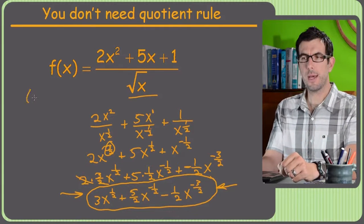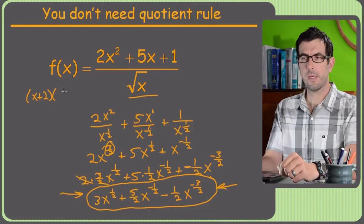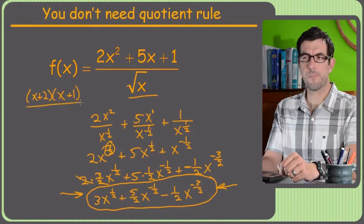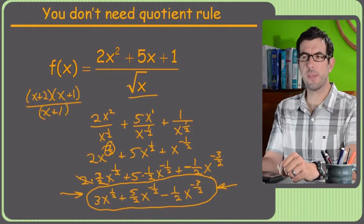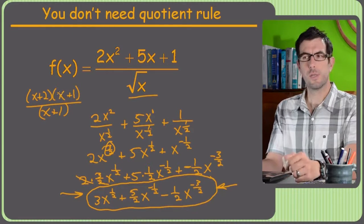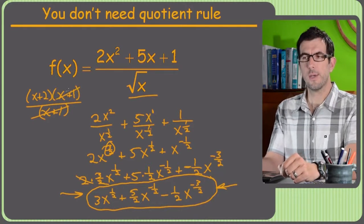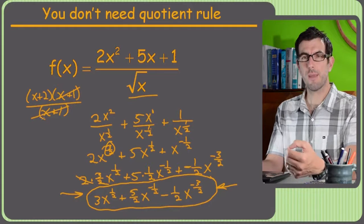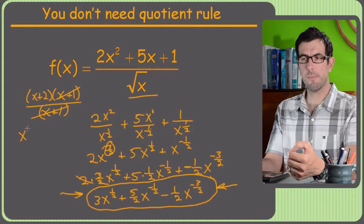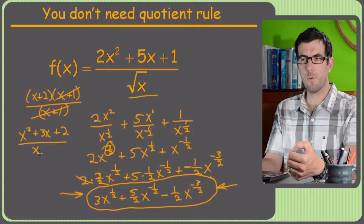Well, let's say we had x plus 2 times x plus 1 over x plus 1, and somebody asks you to find the derivative of that. You don't need to quotient rule, right, because you could just do this. Well, by the same token, you should always try and factor first, because the same problem, x squared plus 3x plus 2 over x plus 1, not so obvious that it would cancel, is it?